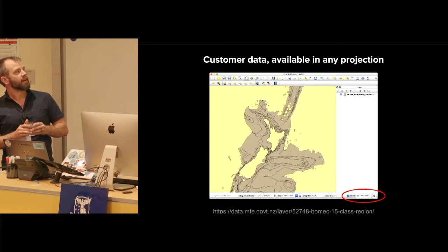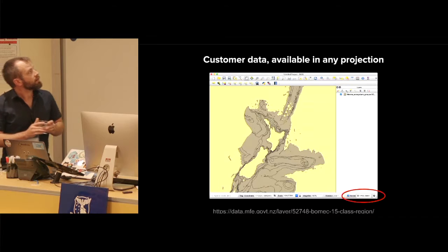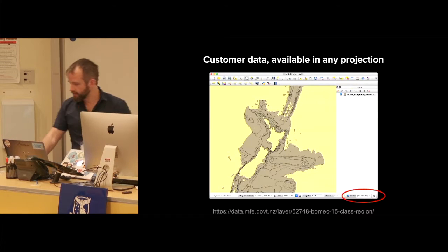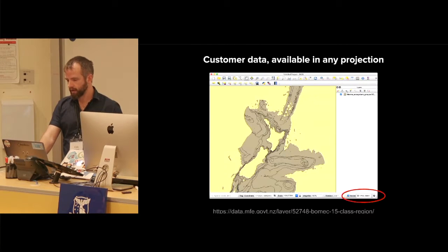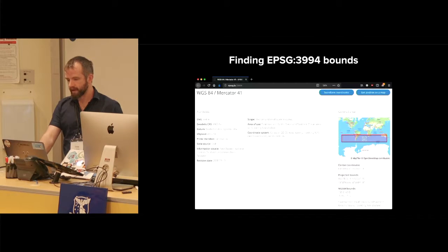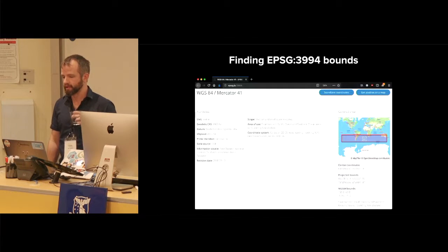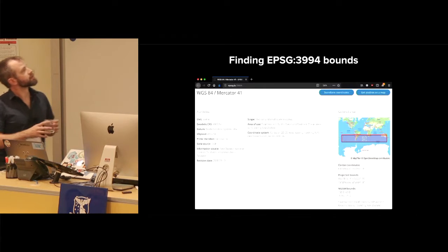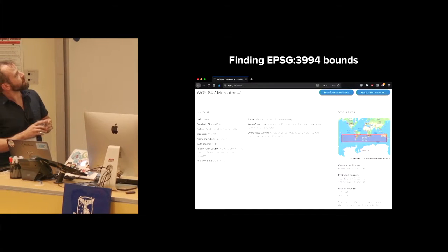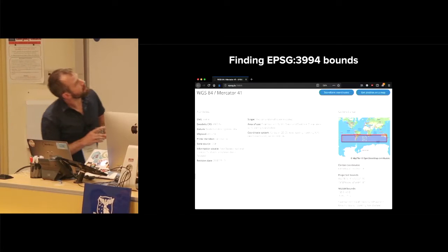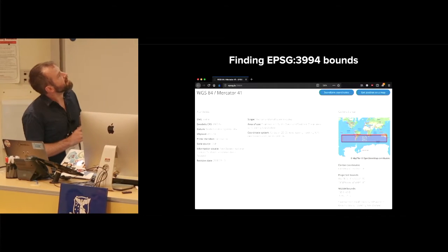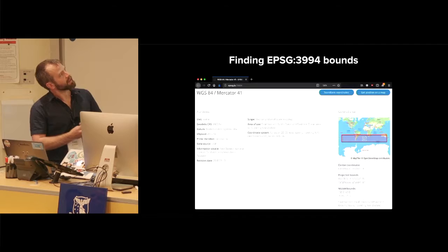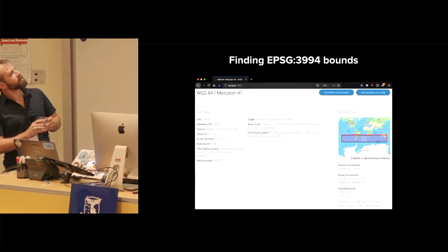You'll note that this is in EPSG 3994. That's a projection, a fairly normal Mercator projection. It covers an area around New Zealand. Wait a second, what's going on there? It kind of looks like it doesn't cover New Zealand, but it covers everything else.